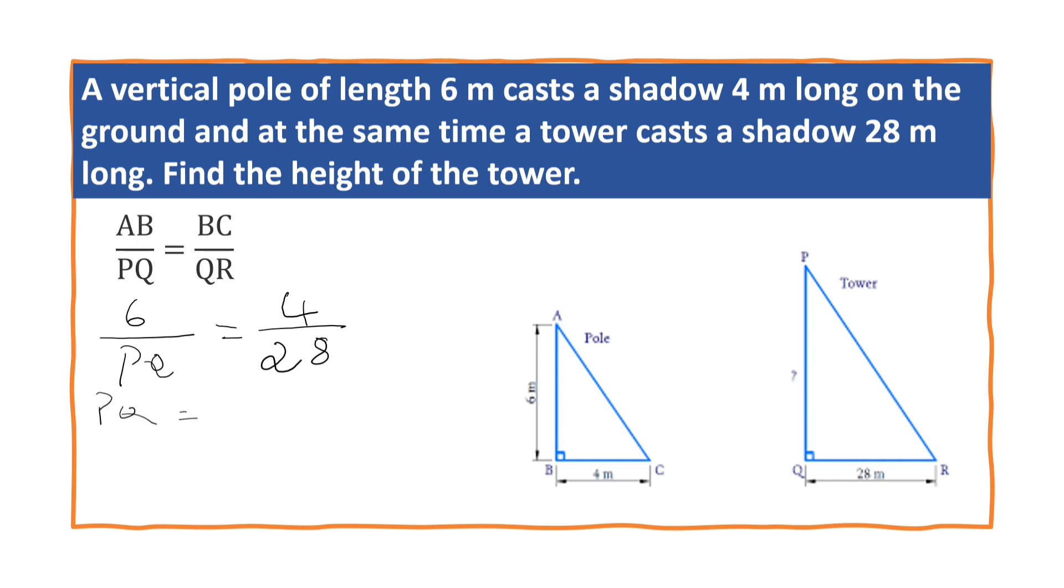So PQ is equal to, cross multiply. Before that, you can simplify. 4 into 7, 6 times 7 are 42m. So the height of the tower is 42m.